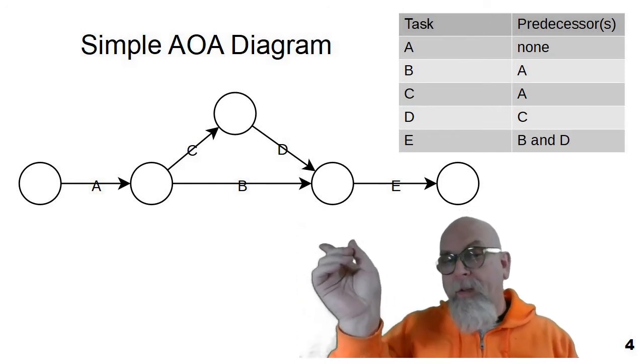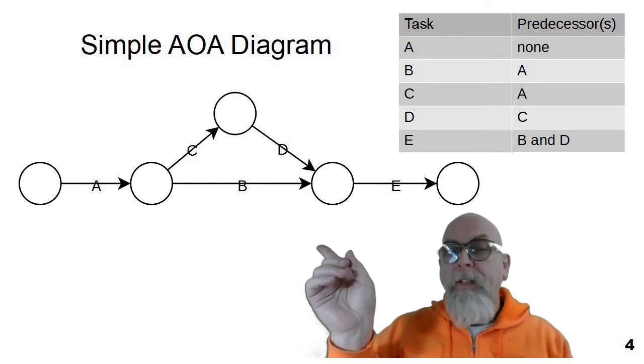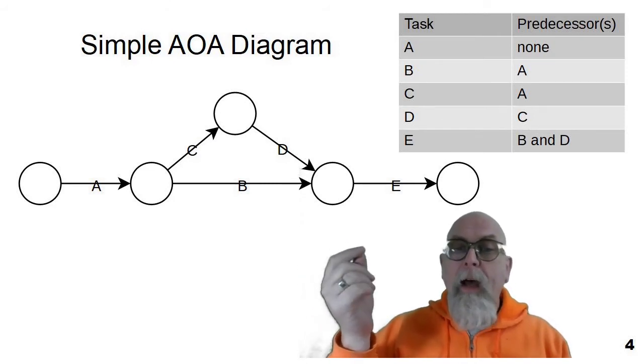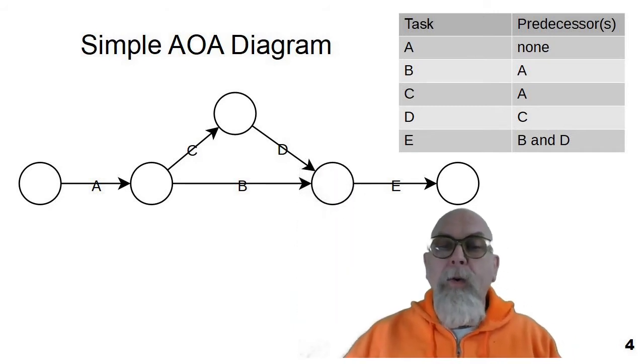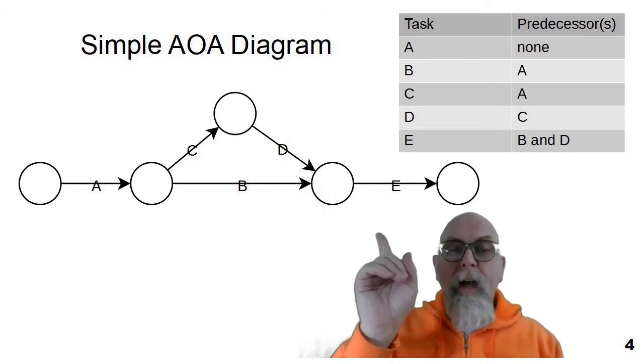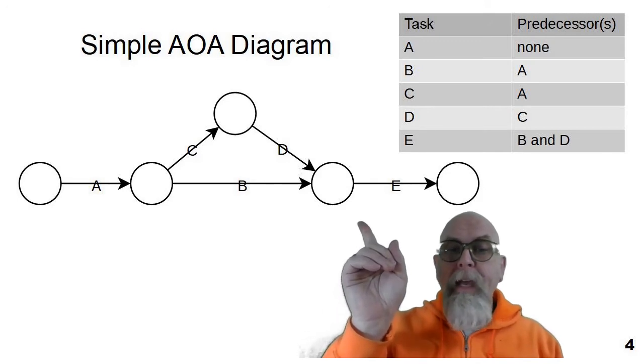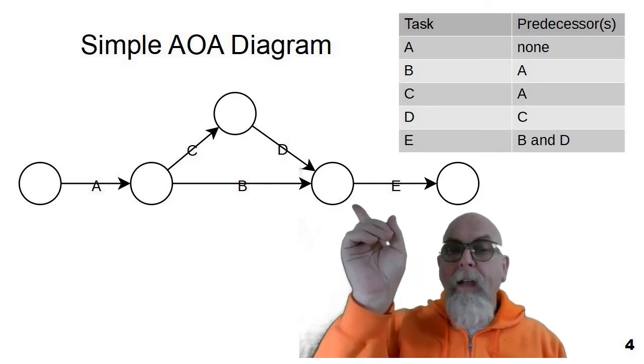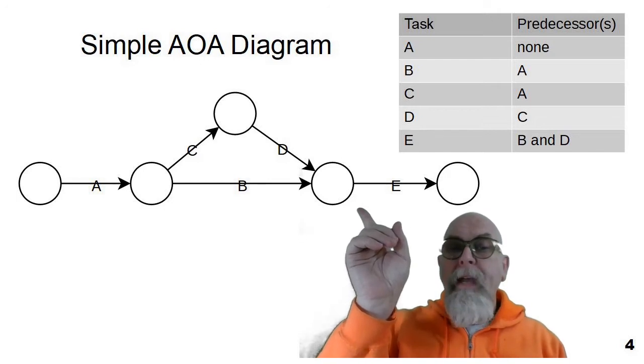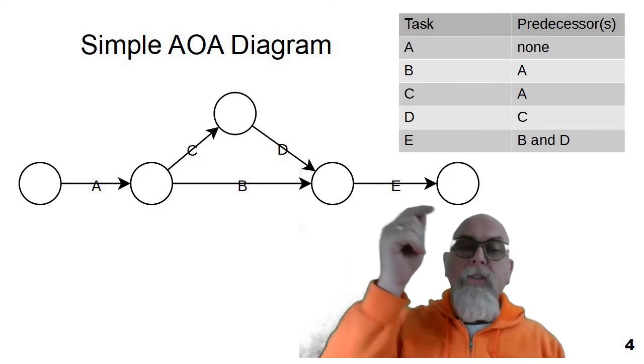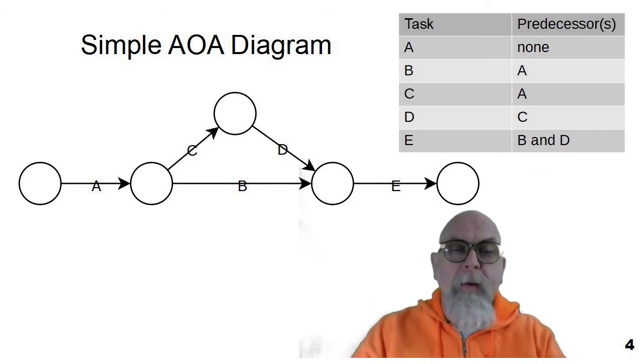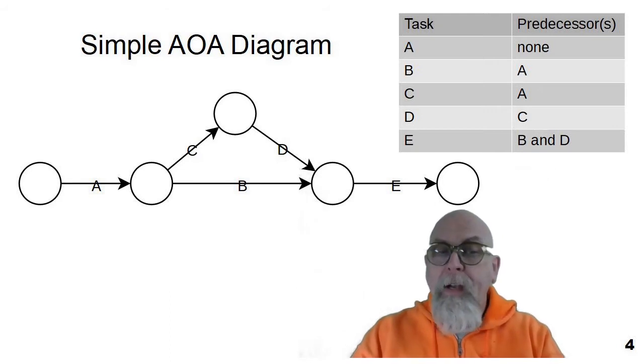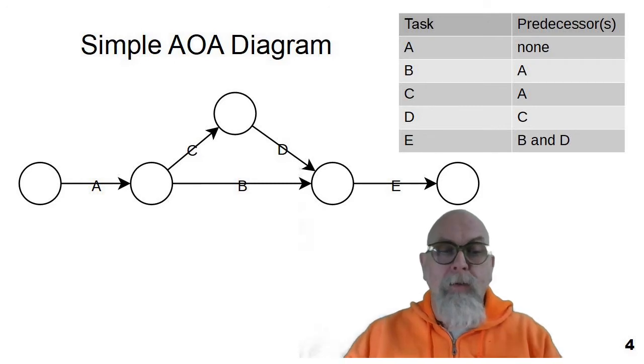For instance, this node, the node over here, would represent when A is complete. The node up there would represent the node where C is complete. And this node would represent when B and D are complete. So if we're here at this node, B and D have arrived, and we're now going to start the activity E. You can see how this diagram differs from the activity on node diagram, the AON diagram. But you will see these in industry, and you will see people use these and draw these.